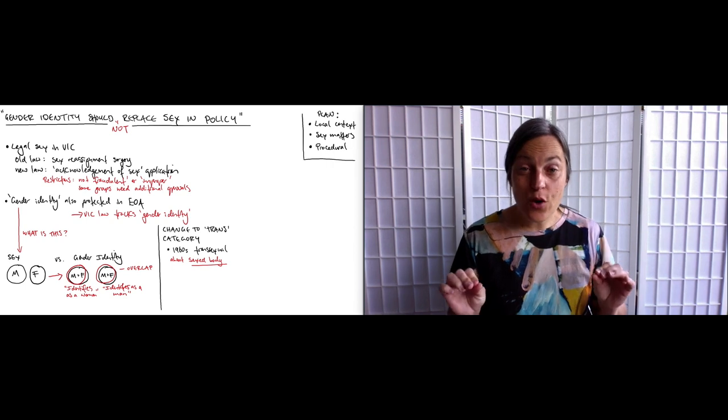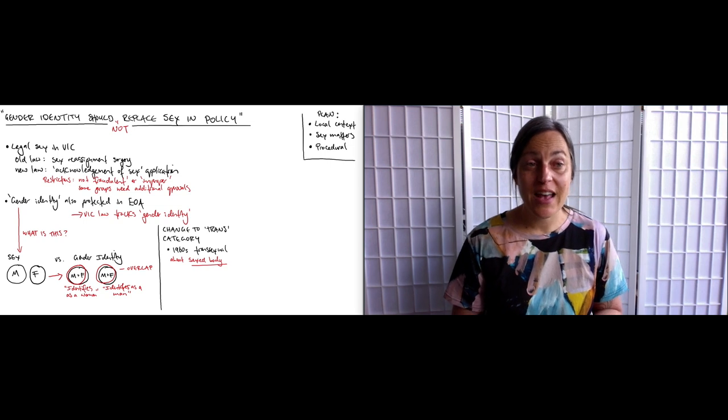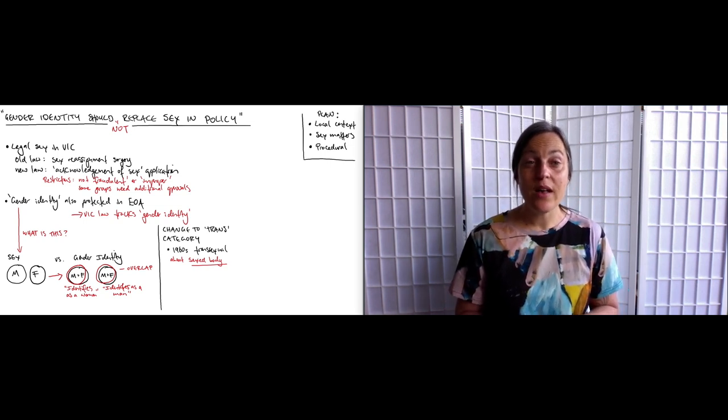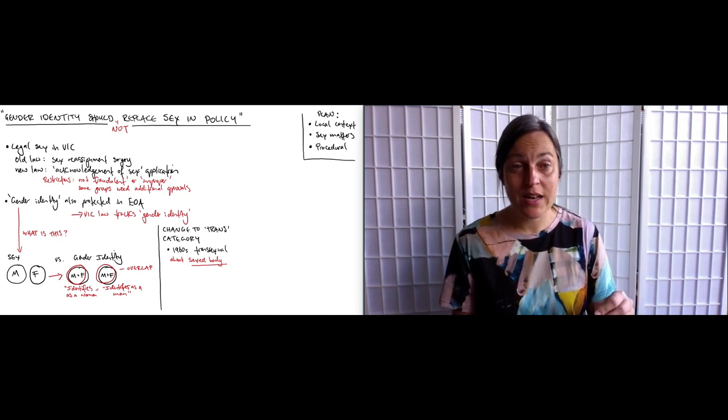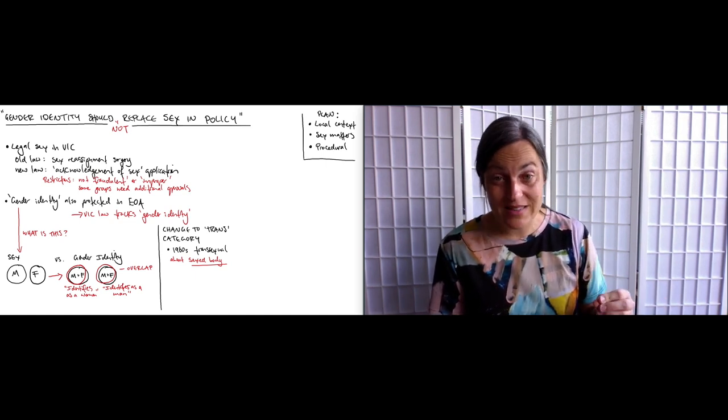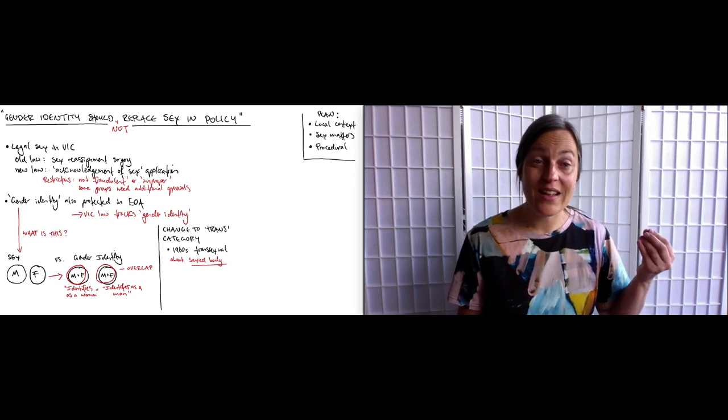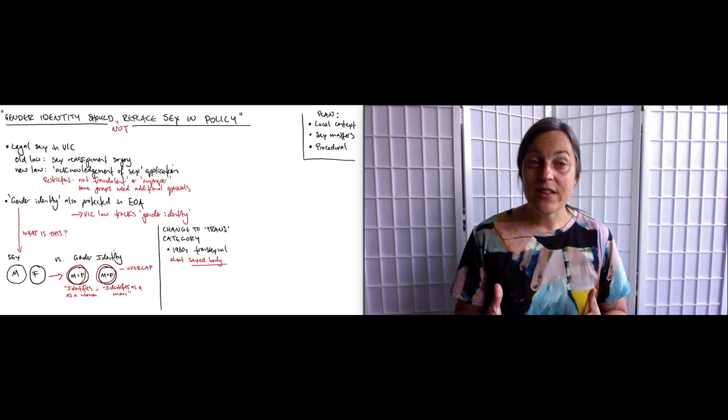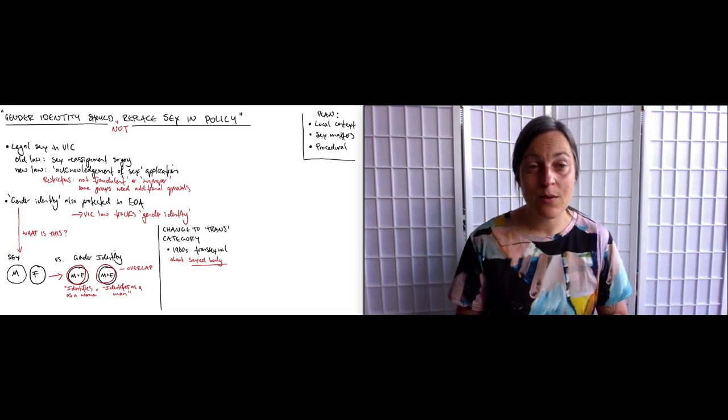So a 2015 report from the United States on 27,715 transgender people found that the number of trans women, which is biological males who identify as women, who had undergone sex reassignment surgery was 12%. That means 88% had not, so in other words were transgender but not transsexual. People with severe dysphoria about the sexed body are likely to have surgery in much higher numbers than this.